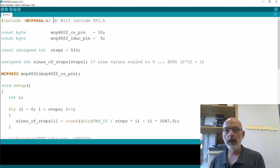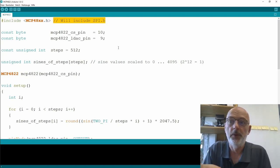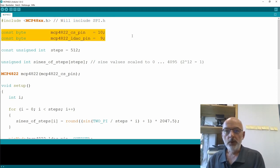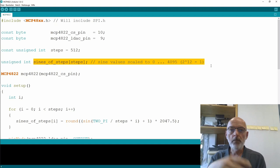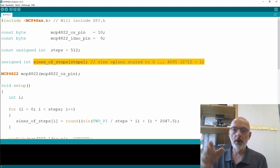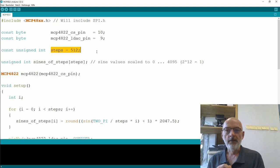And that library will include SPI.h because we're using the SPI interface. I'm defining my two pins here, which I'm using: the chip select pin for my MCP4822 and the load DAC pin. And I'm using an unsigned int array to store pre-calculated sine values for full sine values from 0 to 360 degrees in 512 steps.